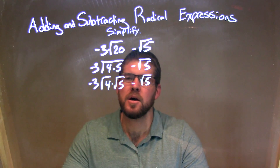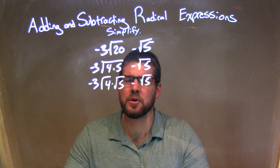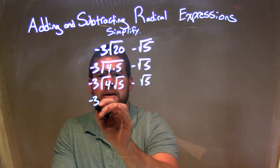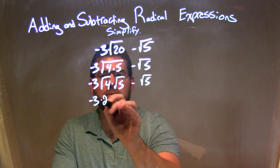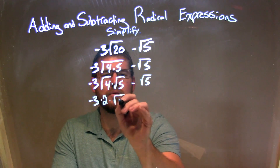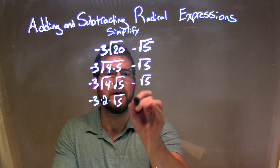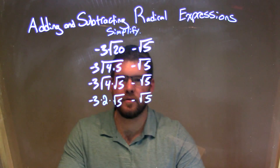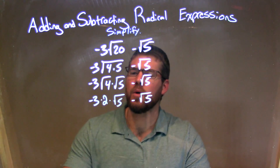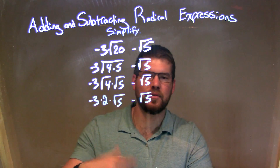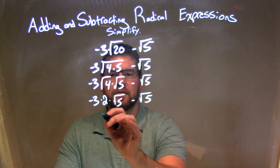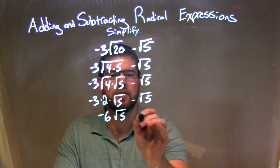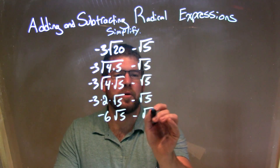Okay, we can simplify a little bit now. The square root of 4 is just 2. So we have negative 3 times 2 times the square root of 5, minus the square root of 5. Well, negative 3 times 2 is negative 6. So we have negative 6 times the square root of 5, minus the square root of 5.